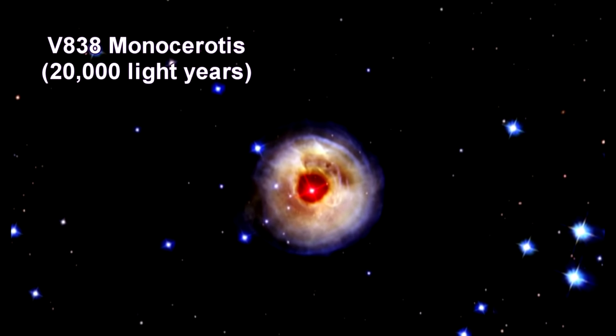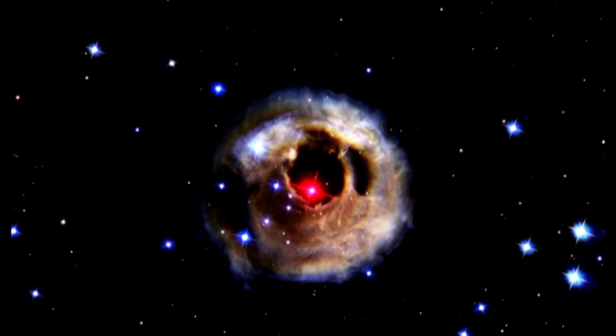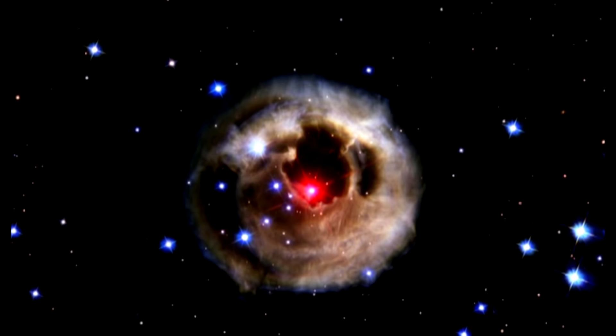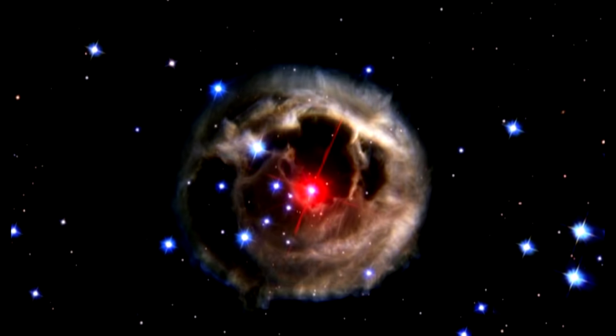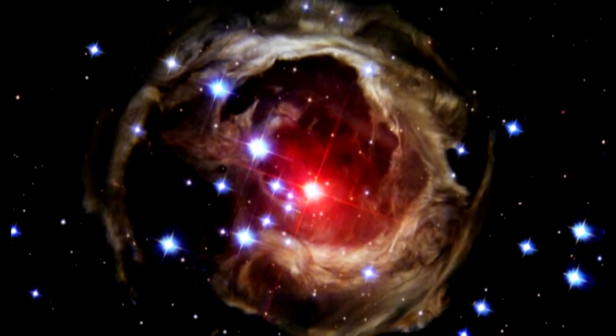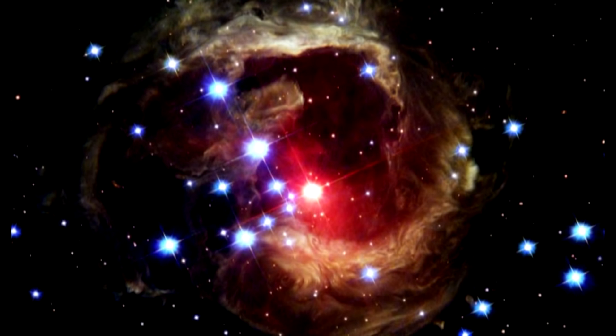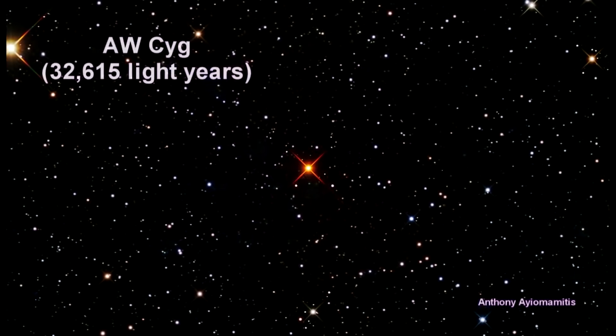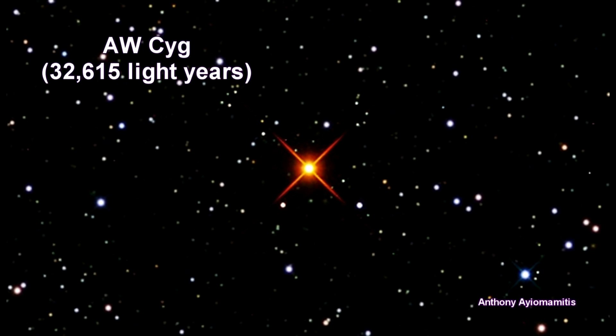Hubble's latest image of the star V838 Monocerotis reveals dramatic changes in the illumination of surrounding dusty cloud structures. The effect, called a light echo, has been unveiling never-before-seen dust patterns ever since the star suddenly brightened for several weeks in early 2002. During the outburst, the normal faint star suddenly brightened, becoming 600,000 times more luminous than our sun. Here's another carbon star, like Betelgeuse. Only AW CYG is much further away.